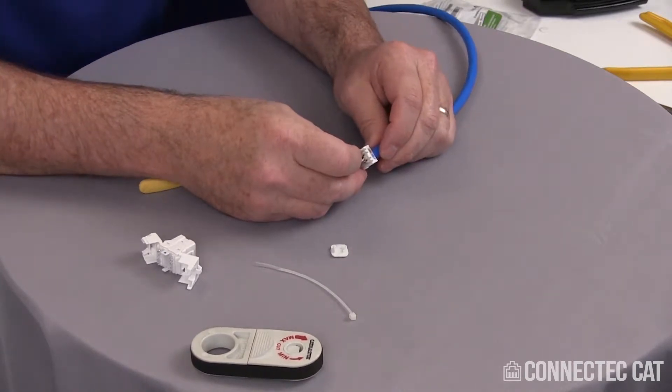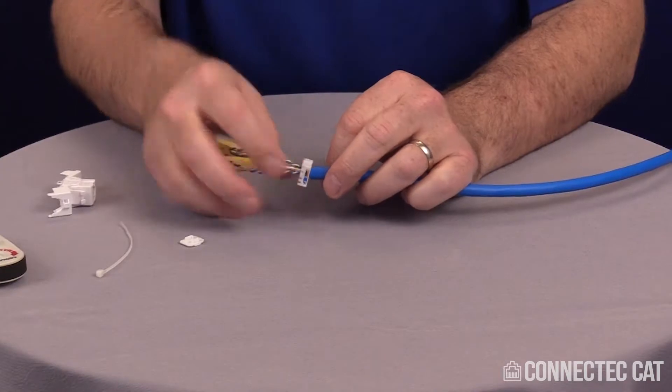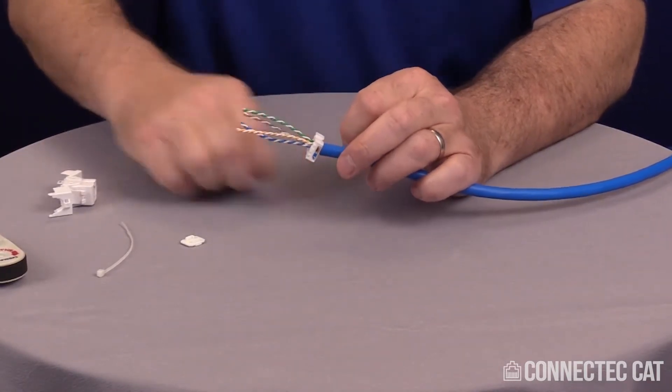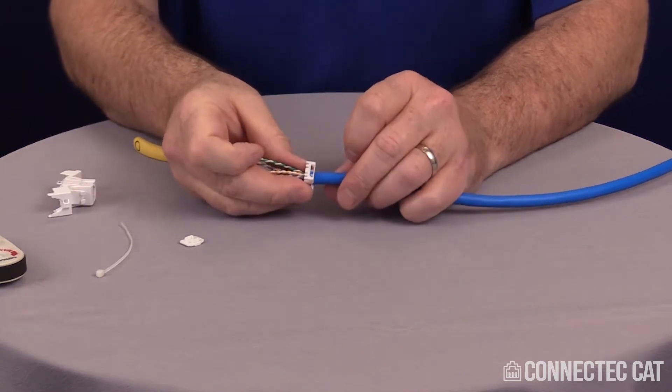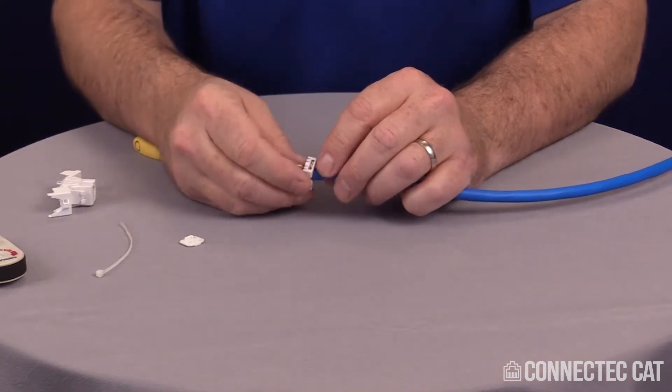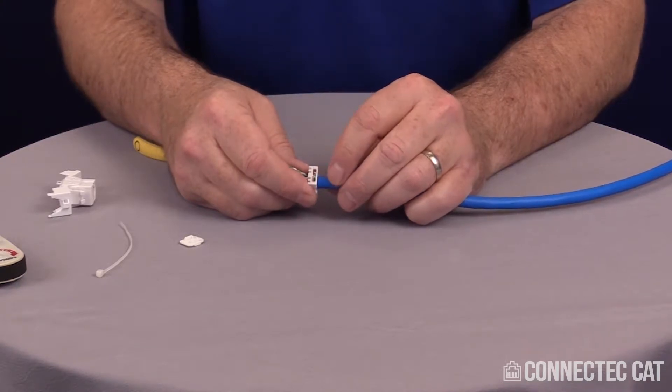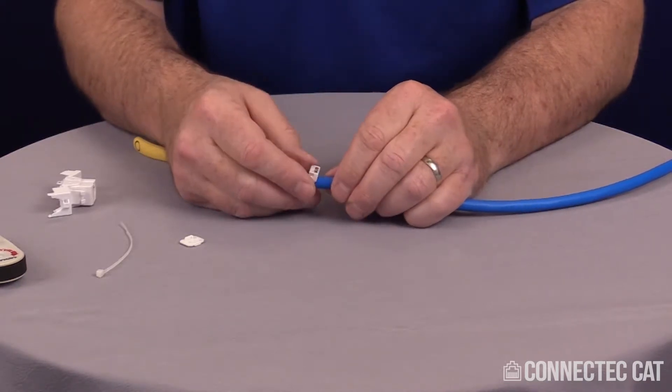Now you'll see on the load bar that two colors are always constant. I'm going to remove this ripcord out of the way. The white and blue and the brown and white are always constant. They don't move. The green and orange are swapped depending on whether you're doing 568A or 568B.